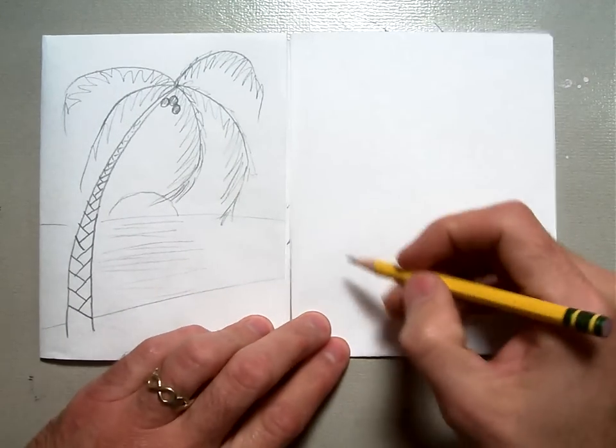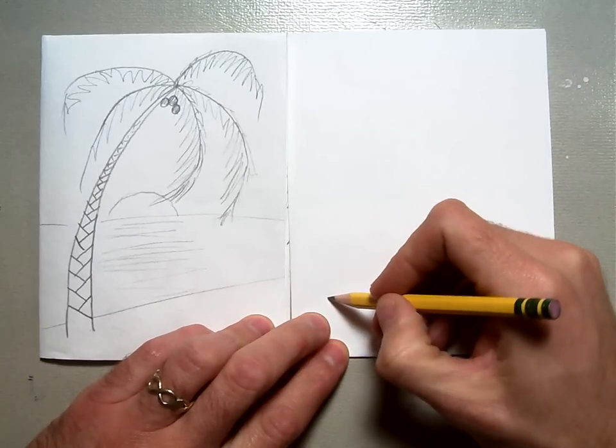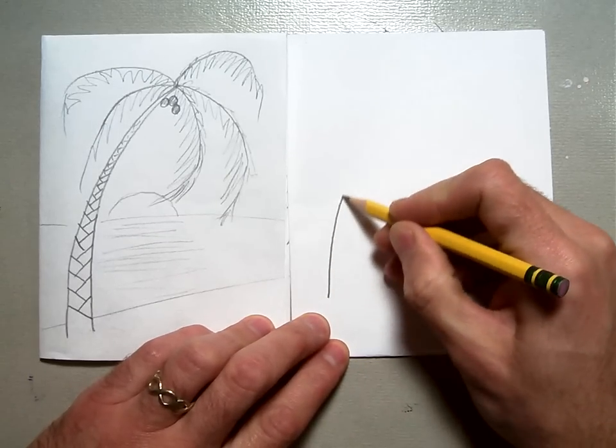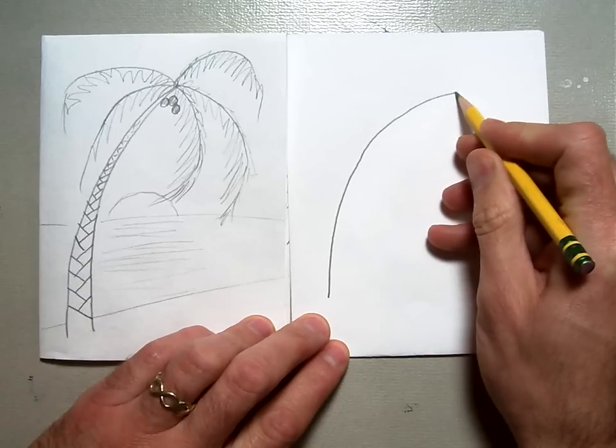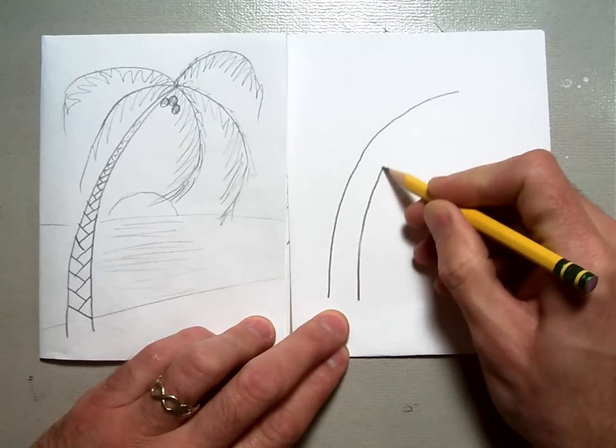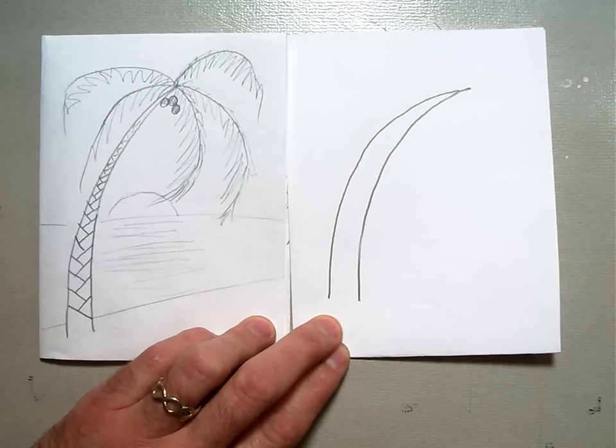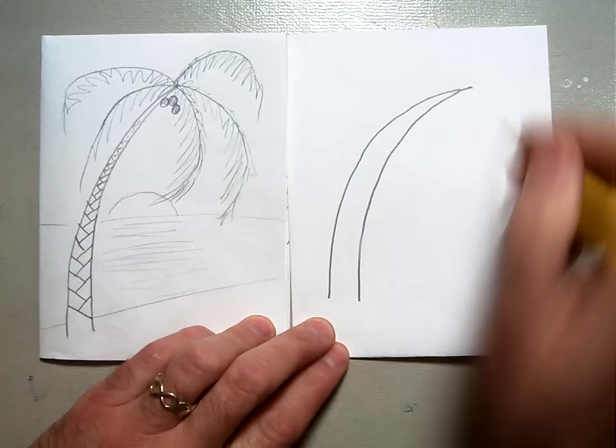and what you're going to do is start with two lines that are almost parallel, but they're going to come to a point. So you're going to curve a line this way, and then start a little bit away from it and curve another line straight up until it meets like that, okay? And that's going to be the trunk for our tree.